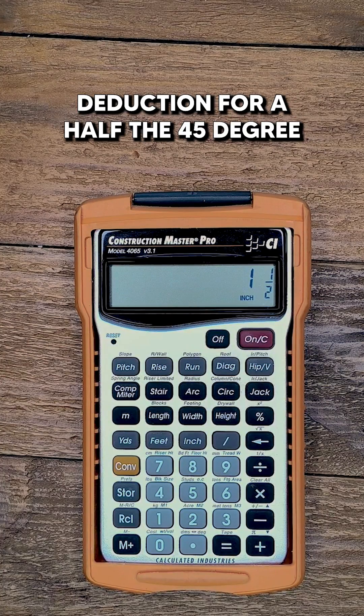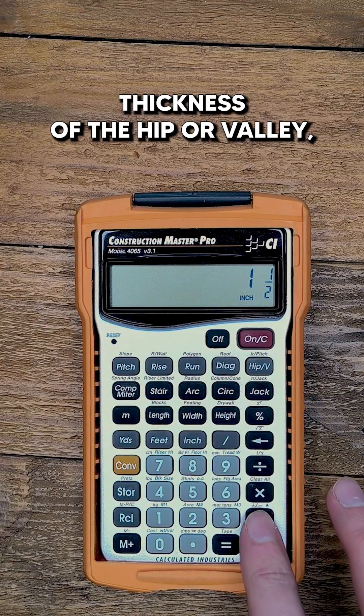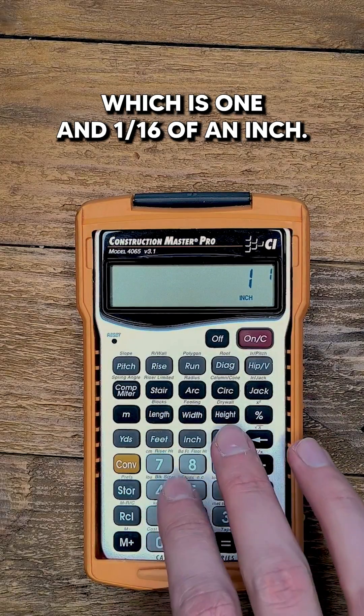But there is also a run deduction for half the 45 degree thickness of the hip or valley, which is 1 and 1 sixteenth of an inch.